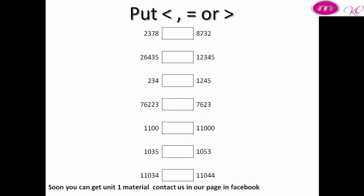More examples — more than, equal, or less than. 2378 versus 8732: eight thousand is more than two thousand, so 8732 is more than 2378. 26,000 versus 12,000: 26,000 is more than 12,000. 234 versus 1245: the second number has four digits and the first number has three digits only, so 1245 is more than 234. 76,223 versus 7623: the first number has five digits, so the first number is more than the second number.